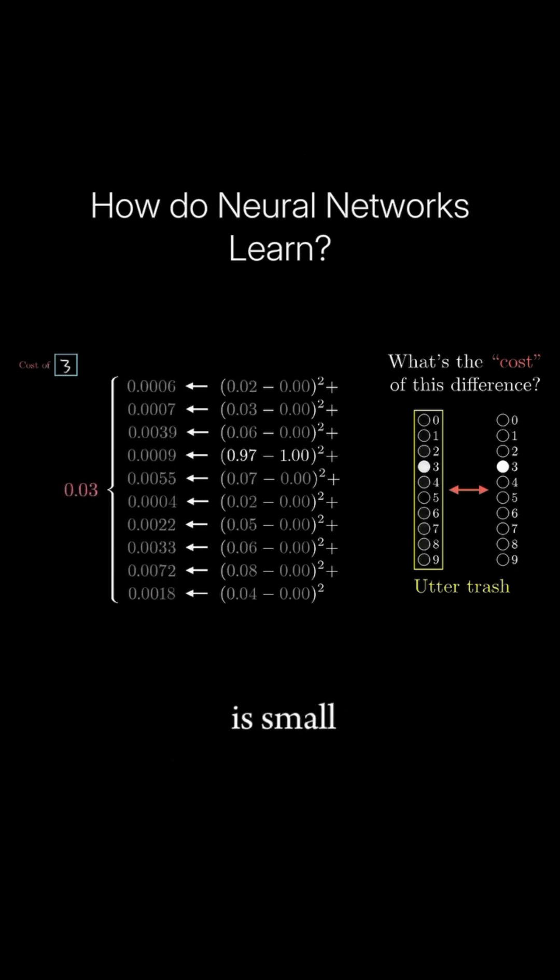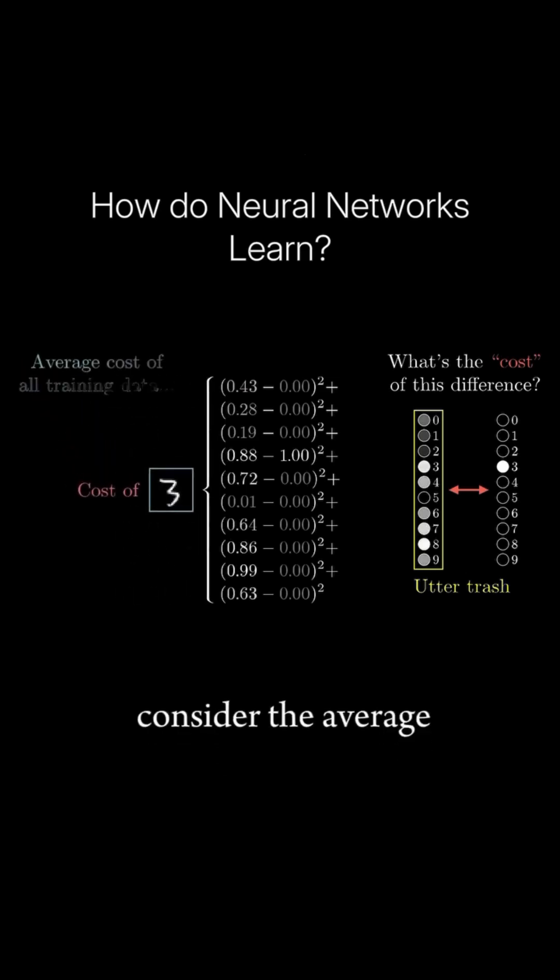Notice this sum is small when the network confidently classifies the image correctly, but it's large when the network seems like it doesn't really know what it's doing. So then what you do is consider the average cost over all of the tens of thousands of training examples at your disposal. This average cost is our measure for how lousy the network is.